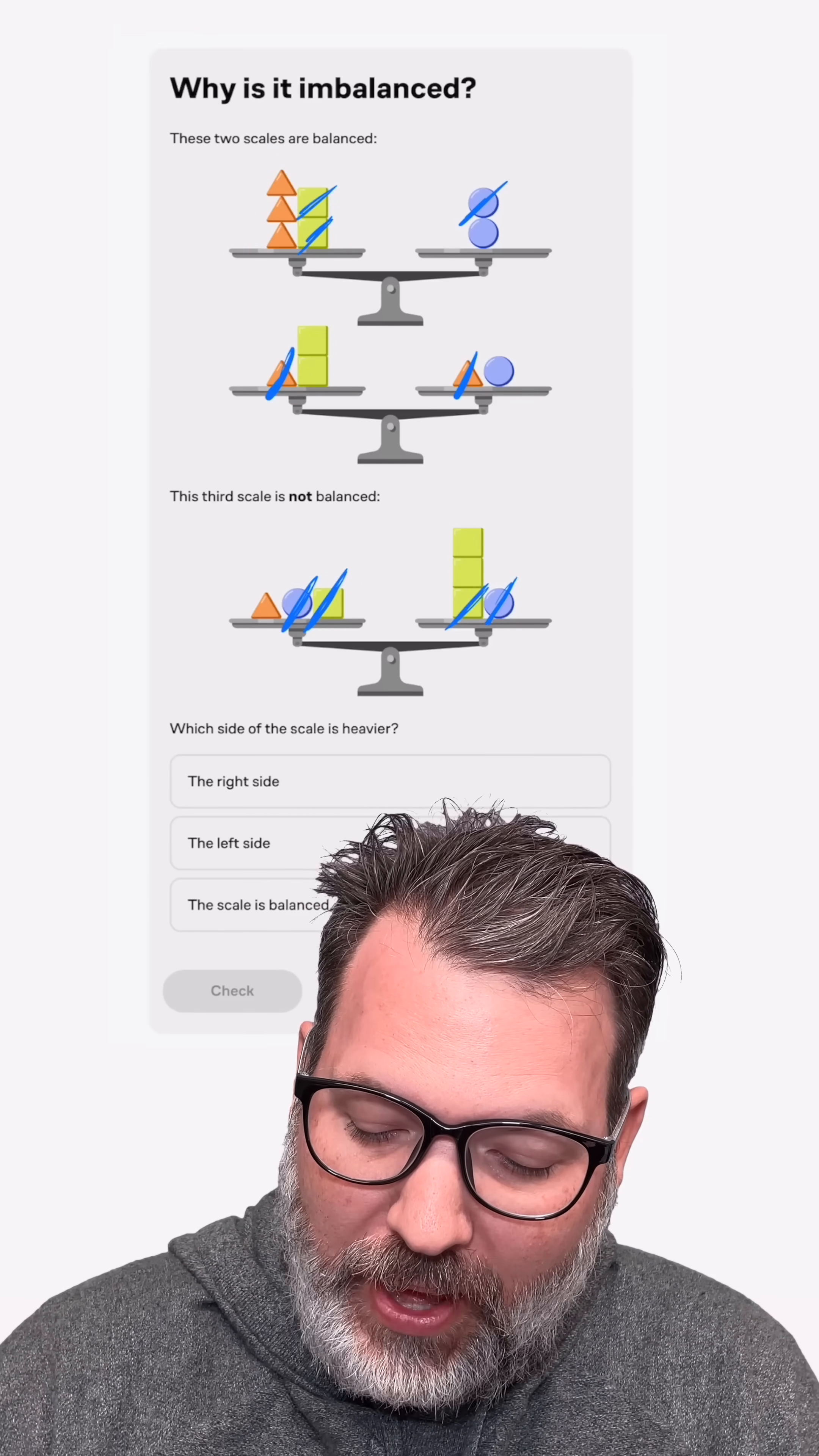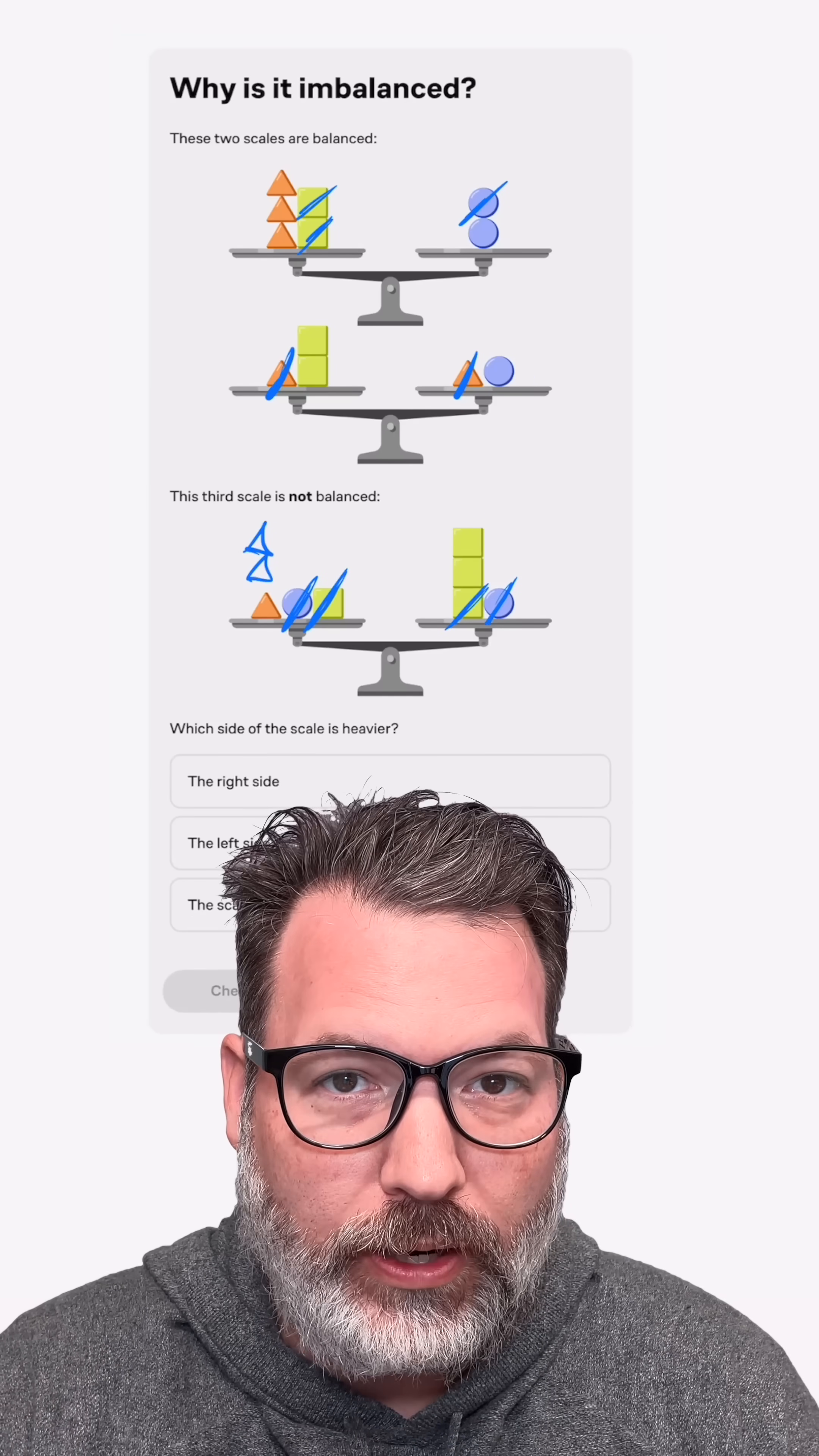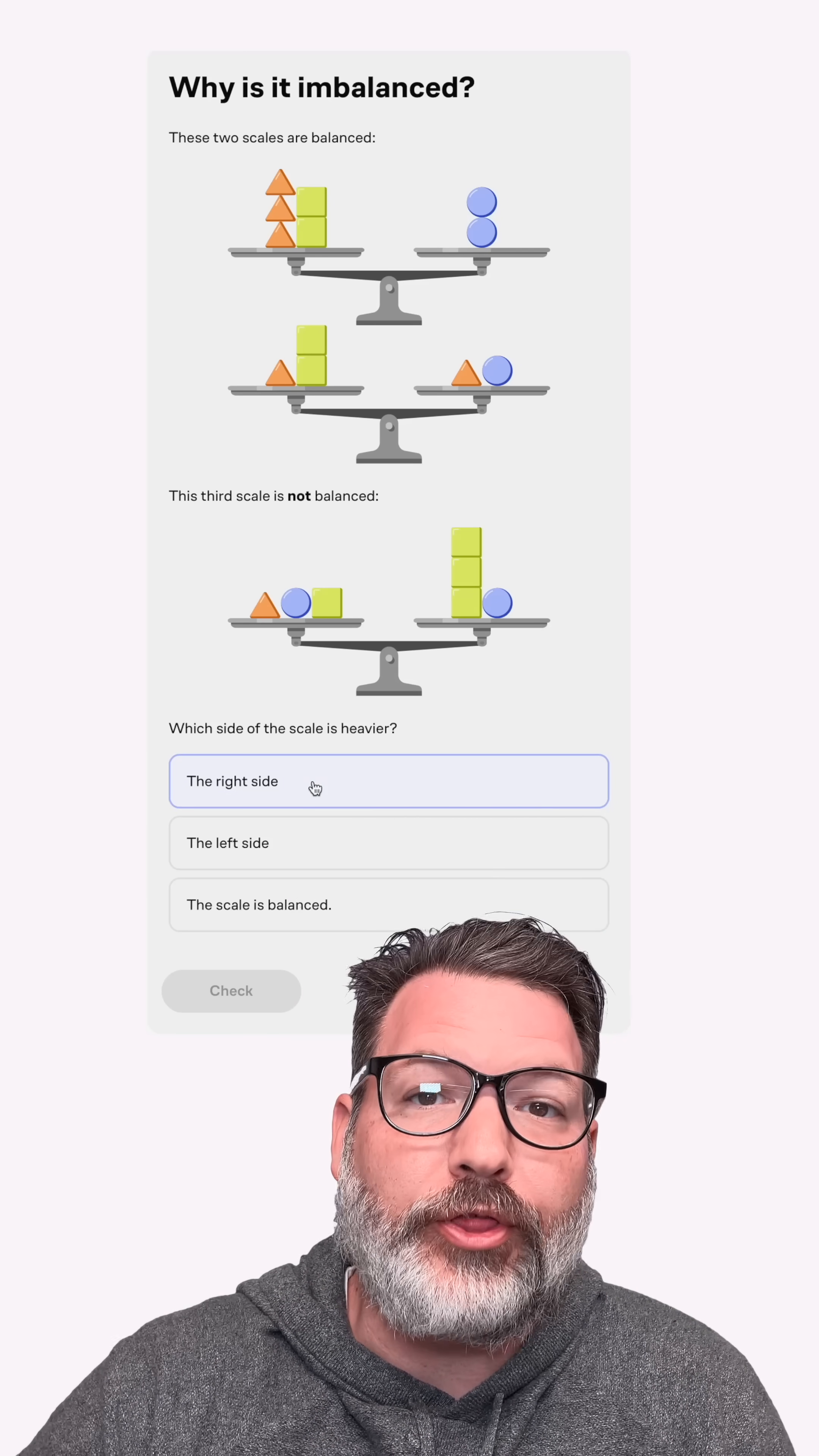those two squares need to be matched up with three triangles on the left here, not just one, which must tell me that the right side of that scale is heavier than the left side. And so, of course, I want to go ahead and select the right side.